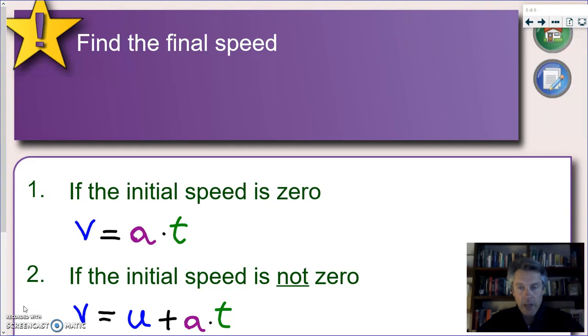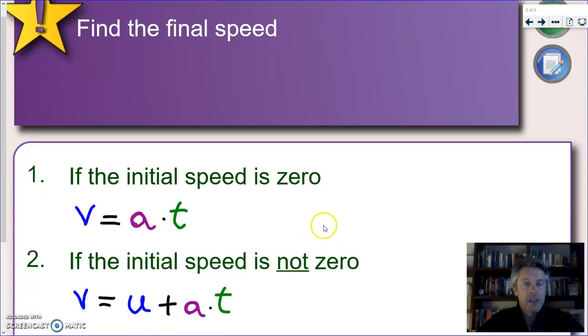And basically, this really comes from rearranging our previous formula, you have two options. The first option is very simple. What happens if the initial speed is zero? So you're accelerating from rest. You start from zero and for a time t, you're accelerating. Your final speed is very simple. It's just acceleration times the time.